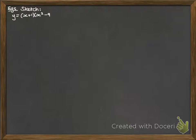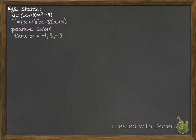So some examples. We are going to sketch this graph here. So the first thing is to factorise it fully so we can get the roots of the equation. We can see that it would be a positive cubic. If you multiplied out those brackets, it would give us an x cubed term at the beginning. And it will go through minus 1, 3, and minus 3.